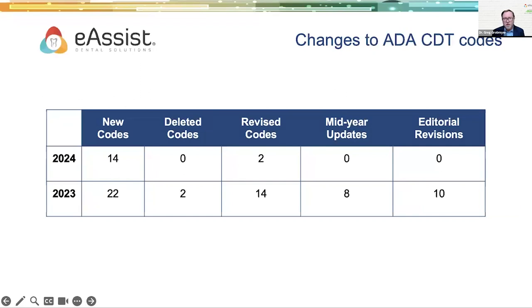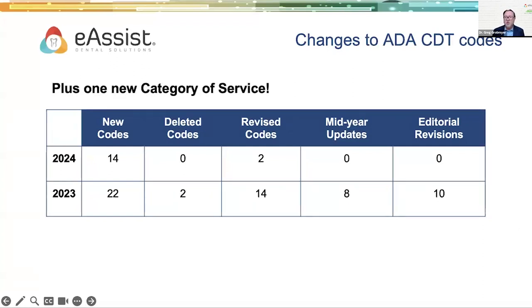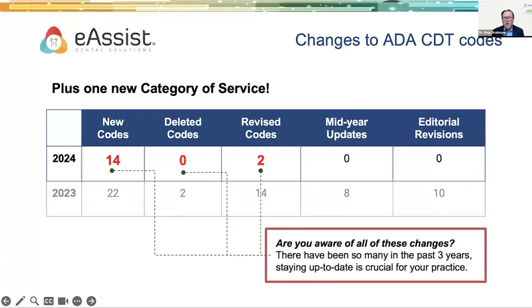Let's look at the CDT code changes over the last several years. Since 2020, there have been over 200 changes to the CDT code set. If you haven't updated your coding resources since the pandemic, you're 200 behind. Last year we had 38 changes; the year before, 46; the year before that, 61. This year we had fewer than normal — 16 total changes plus one additional new category of service. Today we'll cover the ones that apply to most general practitioners.